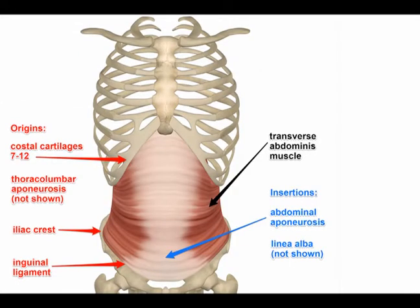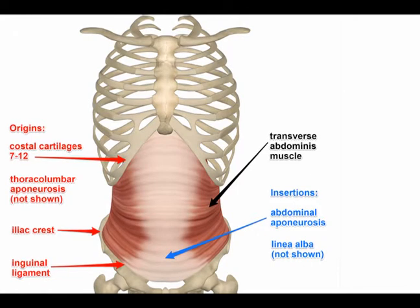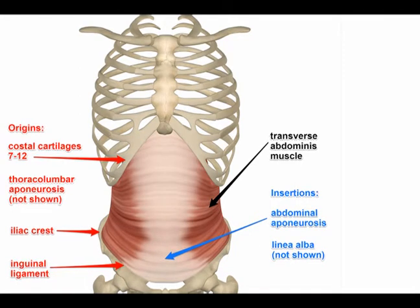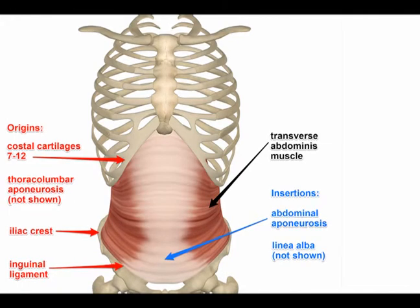The origin of the TVAs is the thoracolumbar fascia, the lateral aspect of the inguinal ligament, the anterior iliac crest, and the costal cartilage of ribs number 7 through 12.